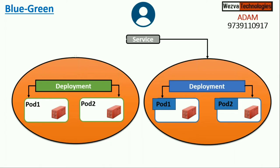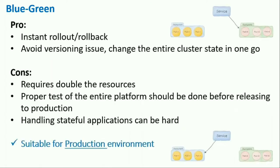Kubernetes doesn't natively support blue-green, so we need to implement the strategy ourselves on top of rolling update. Today we'll see how to do it manually, but in real time you're not going to do this manually - we'll automate it using concepts like GitOps, Argo CD, and Argo Rollouts. For now, understand the concept: you have two sets of replicas and just switch the traffic. This is how blue-green helps you achieve zero downtime deployment - from a customer point, there is no impact.